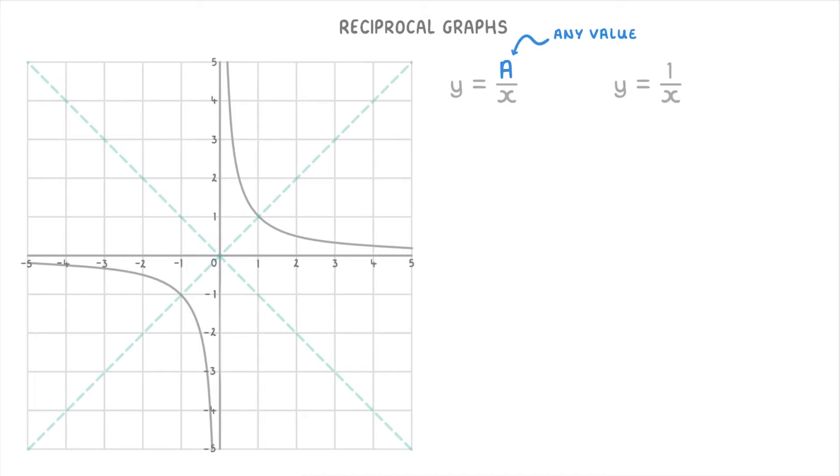If you're ever given a graph but not quite sure if it really is y equals 1 over x, remember that you can just make a table of x and y values and check it for yourself. So in this table, I've picked the x values minus 2, 0, and 2. But you could pick any values that appear on your graph. And then we can plug each of these x values into the equation to find out what the corresponding y values should be.